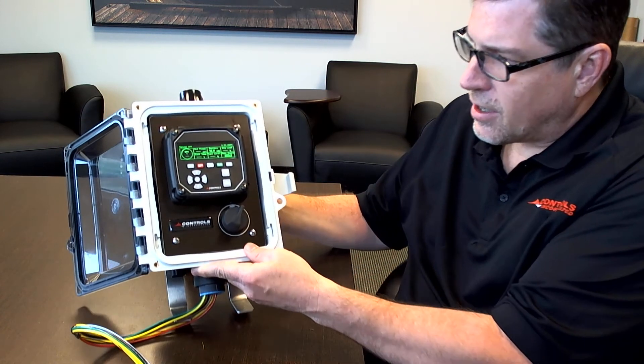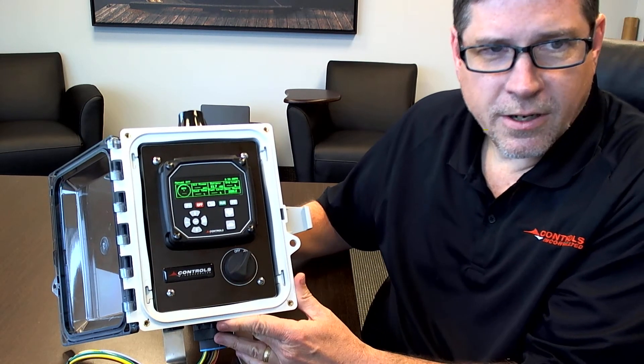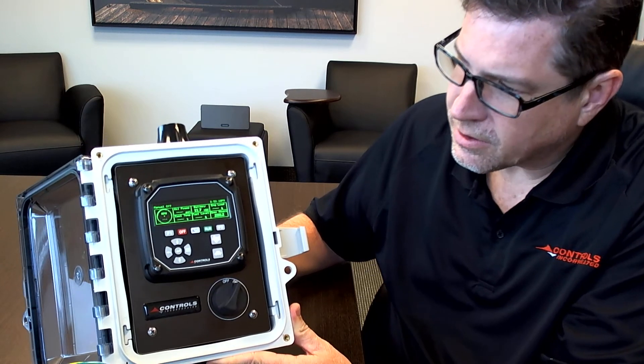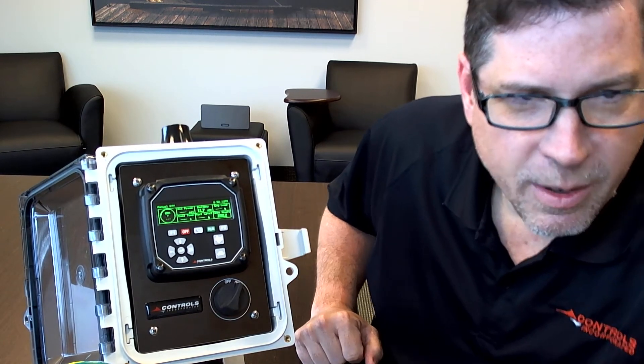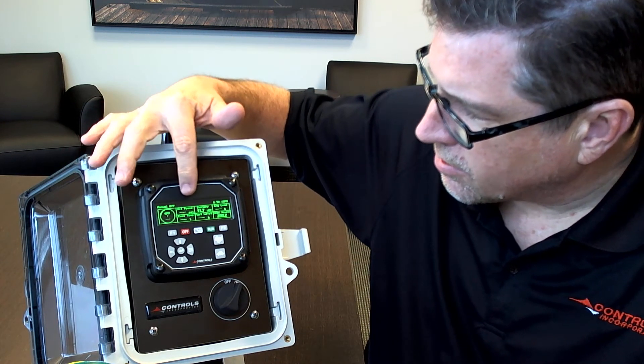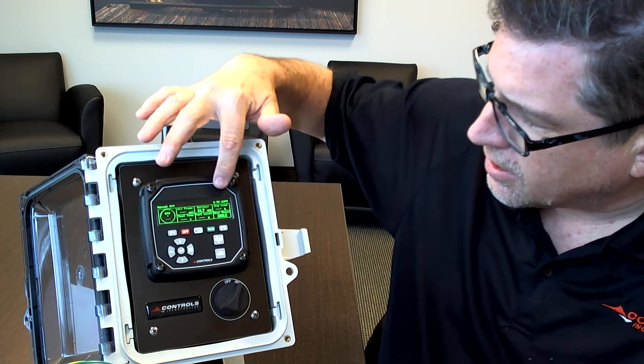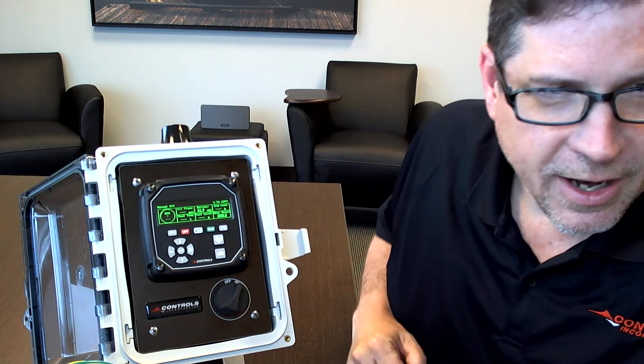The MX itself provides a nice graphical representation of all your critical engine parameters. We've got an RPM gauge, oil pressure, coolant temperature, battery voltage, fuel level, and in this case engine load and operating hours.